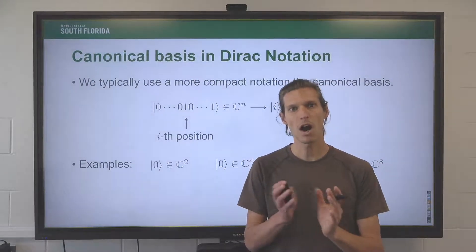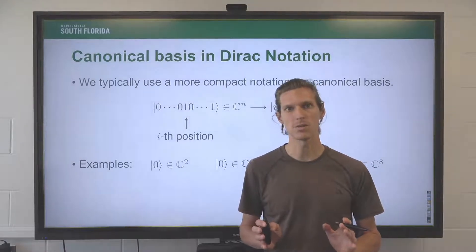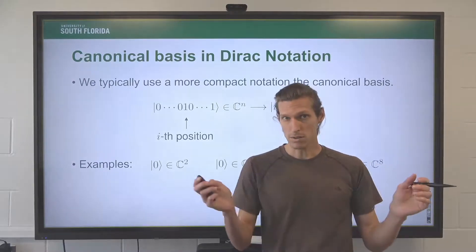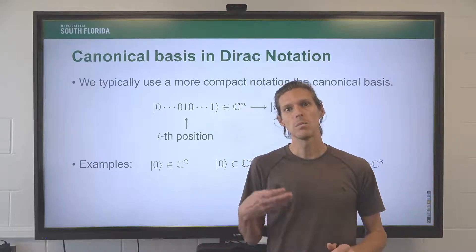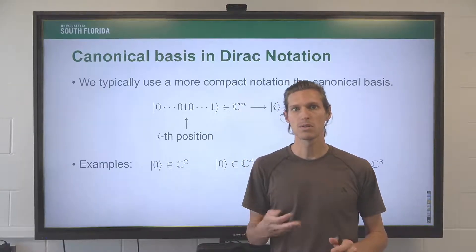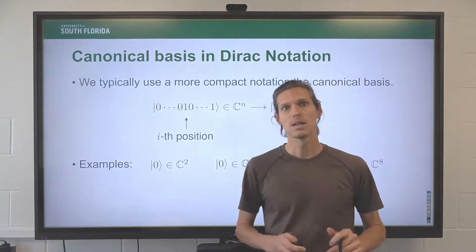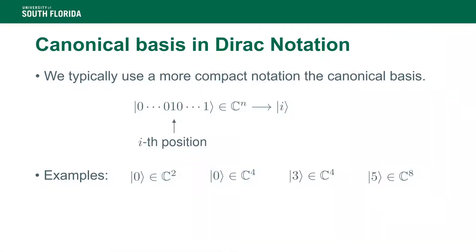There is a very important special case of the Dirac notation involving a slight contraction. Previously we described vectors with entries placed in the bra or ket, but if we place a number i in a bra or ket, it corresponds to the i-th vector of the canonical basis.